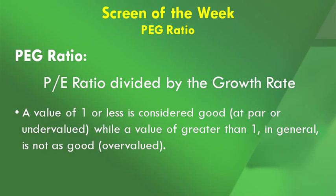The PEG ratio is indeed a ratio — it's not a person, it is a thing. It is a ratio used for determining whether or not a company is undervalued or overvalued. The definition of PEG ratio is the PE ratio divided by the growth rate. A value of one or less is generally considered good, meaning it is at par or undervalued, while a value greater than one is considered not as good — the stock would be considered overvalued.